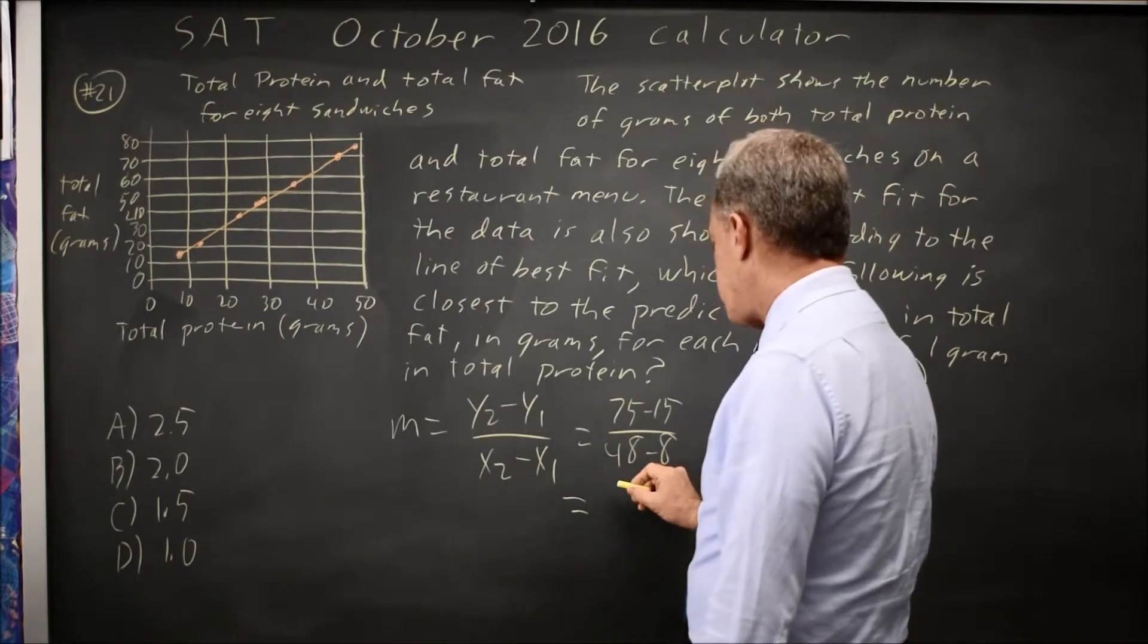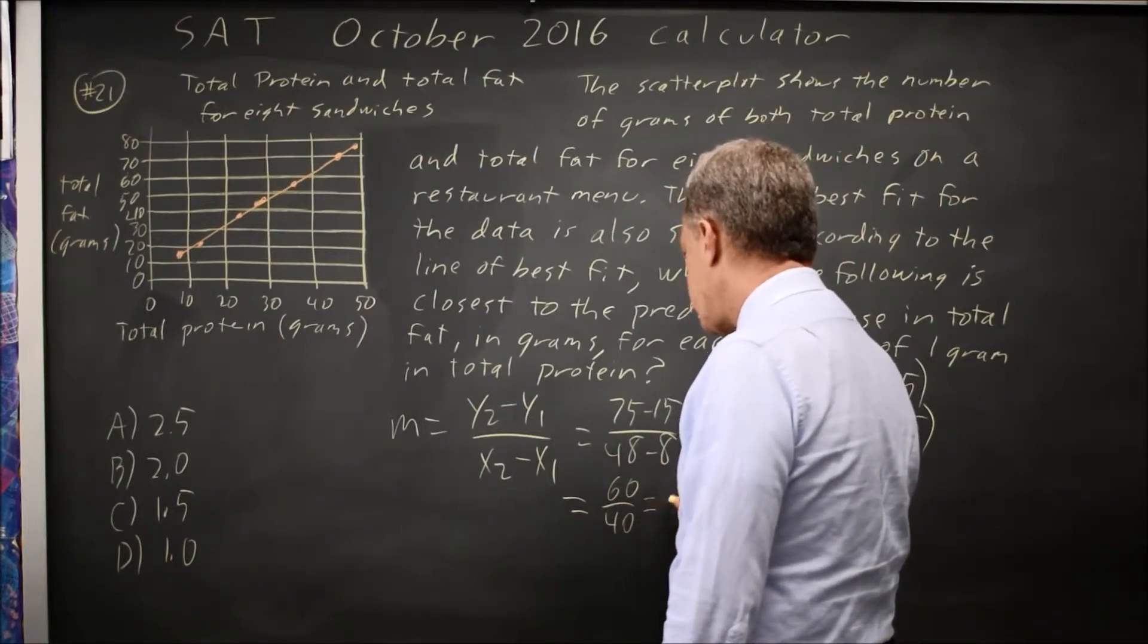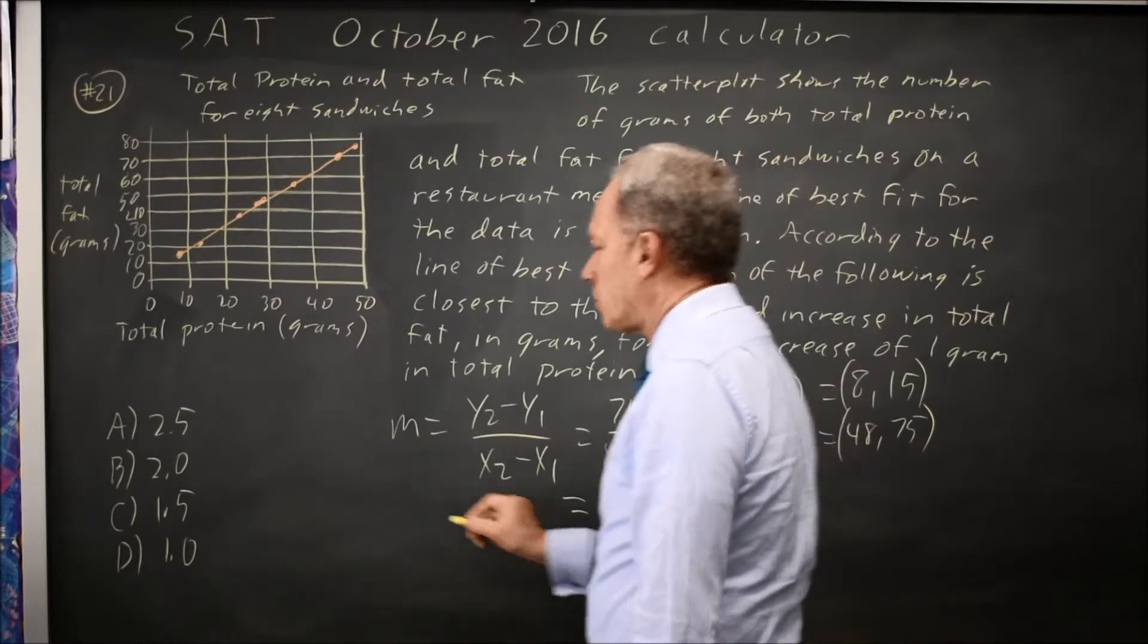And I should do that on the calculator, but I won't. That's 60 over 40, which is 6 over 4 is 3 over 2, or 1.5.